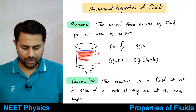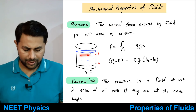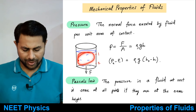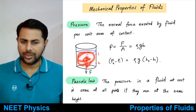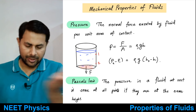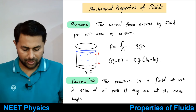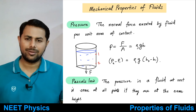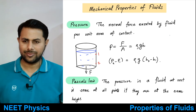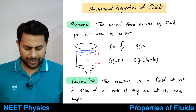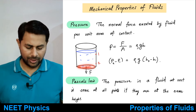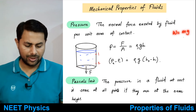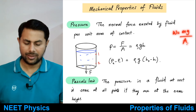For example, suppose you have this container and there is some water in that container — water or any other fluid. Then the weight of this water would be acting downwards. If you take this area at the bottom — area of the container which is in contact with water — how much is the weight acting on that area? It is the weight of water. Area of contact is suppose A.